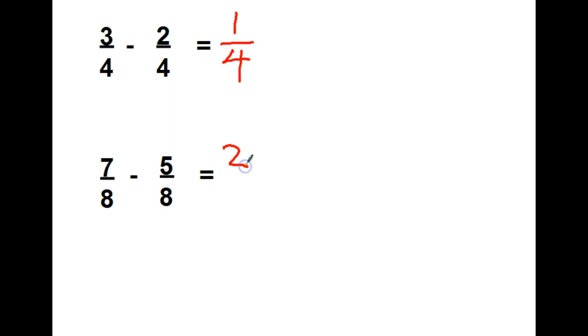7 minus 5 is 2. 8 doesn't change because it's my denominator. 2 eighths, they're both even again, so I can divide them both by 2. And that's going to get me 1 fourth.